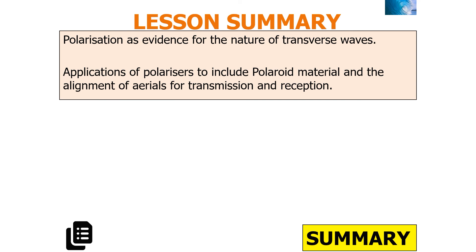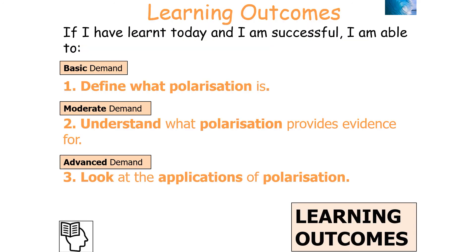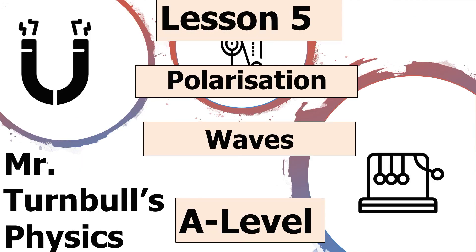In summary, polarisation is used as evidence of the transverse nature of waves. Applications of polarisers include polaroid material and the alignment of aerials for transmission and reception. If we've been successful in today's lesson, we can define what polarisation is, understand what polarisation provides evidence for, and look at its applications in the real world. Thank you very much for watching this lesson on polarisation, part of the AQA A-level physics topic of waves.